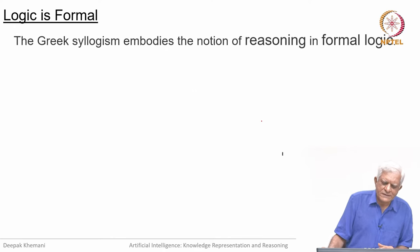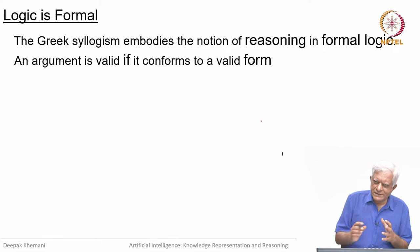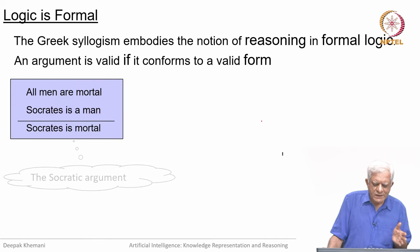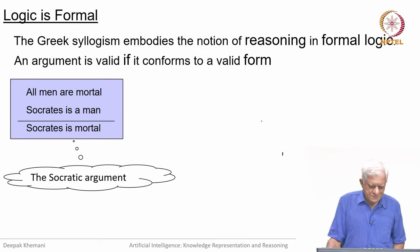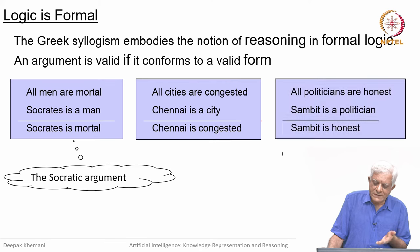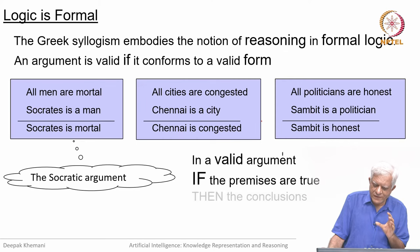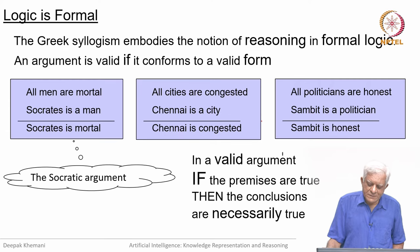We are going to focus a lot on logic. One of the oldest things we know of logic is the Greek syllogism, which embodies the essence of logic — that reasoning is formal, and arguments are valid if they conform to a valid form, not so much concerned with content. For example: all men are mortal, Socrates is a man, therefore Socrates is mortal. You can say all cities are congested, Chennai is a city, therefore Chennai is congested. As long as the argument has a valid form, if the premises are true, the conclusions will necessarily be true. That is the key idea behind logical deduction.